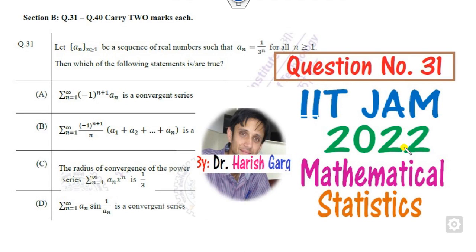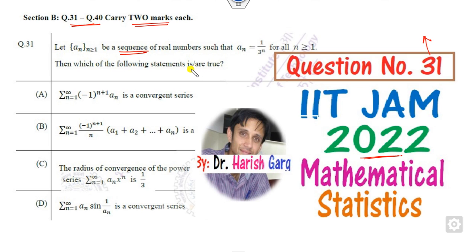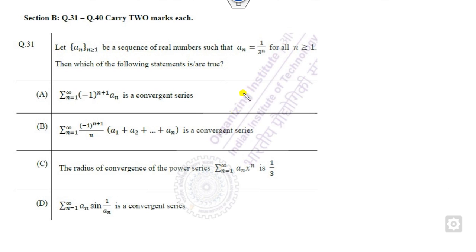Hello everyone, welcome to the next lecture on the IIT JAM 2022 Mathematical Solutions Week. Today we will discuss question number 31, which is related to sequences and series. Since it carries two marks, questions in this category have more than one correct option. Let's see how you can solve this one.